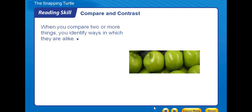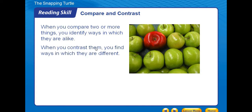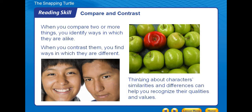The second strategy we are going to use is compare and contrast. When you compare two or more things, you identify ways in which they are alike. When you contrast them, you find ways in which they are different. For example, apples can be different colors as seen in the picture, but both are apples. Even two apples of the same color may differ — one can be sour, one can be sweet.